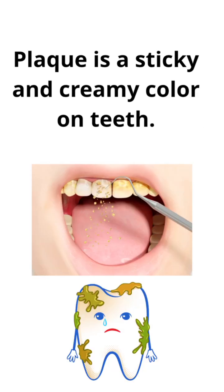Plaque — what is plaque? It's a sticky, creamy-colored material on teeth. That's why when you look in the mirror, you will find plaque or yellow material on your teeth.